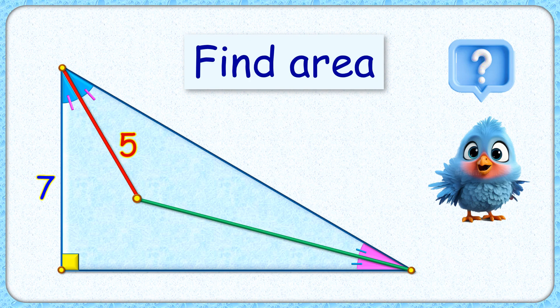Welcome everyone to this interesting question. Given is a right angle triangle with one of the sides as 7 centimeters. These two lines are the angular bisectors and the length of the red line segment is 5 centimeters. The exciting part is, with this limited data, we have to find the area of the triangle.